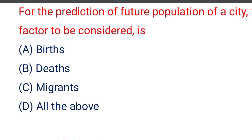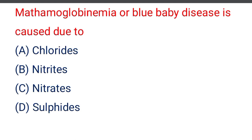Next question: for the prediction of the future population of a city, the factors to be considered are — option A birth, option B death, option C migrants, option D all of the above. The correct answer is option D, all of the above. For the purpose of population forecasting, we consider birth, death, and migrants.